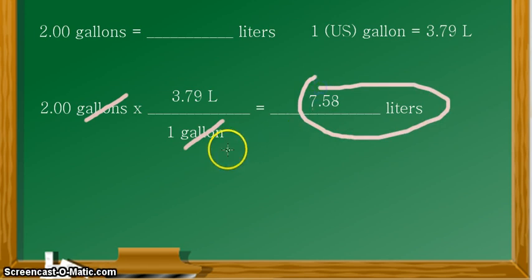So we now know that there is 7.58 liters in 2.00 gallons. Okay, so that's it for this example. Thank you for listening and continue learning.